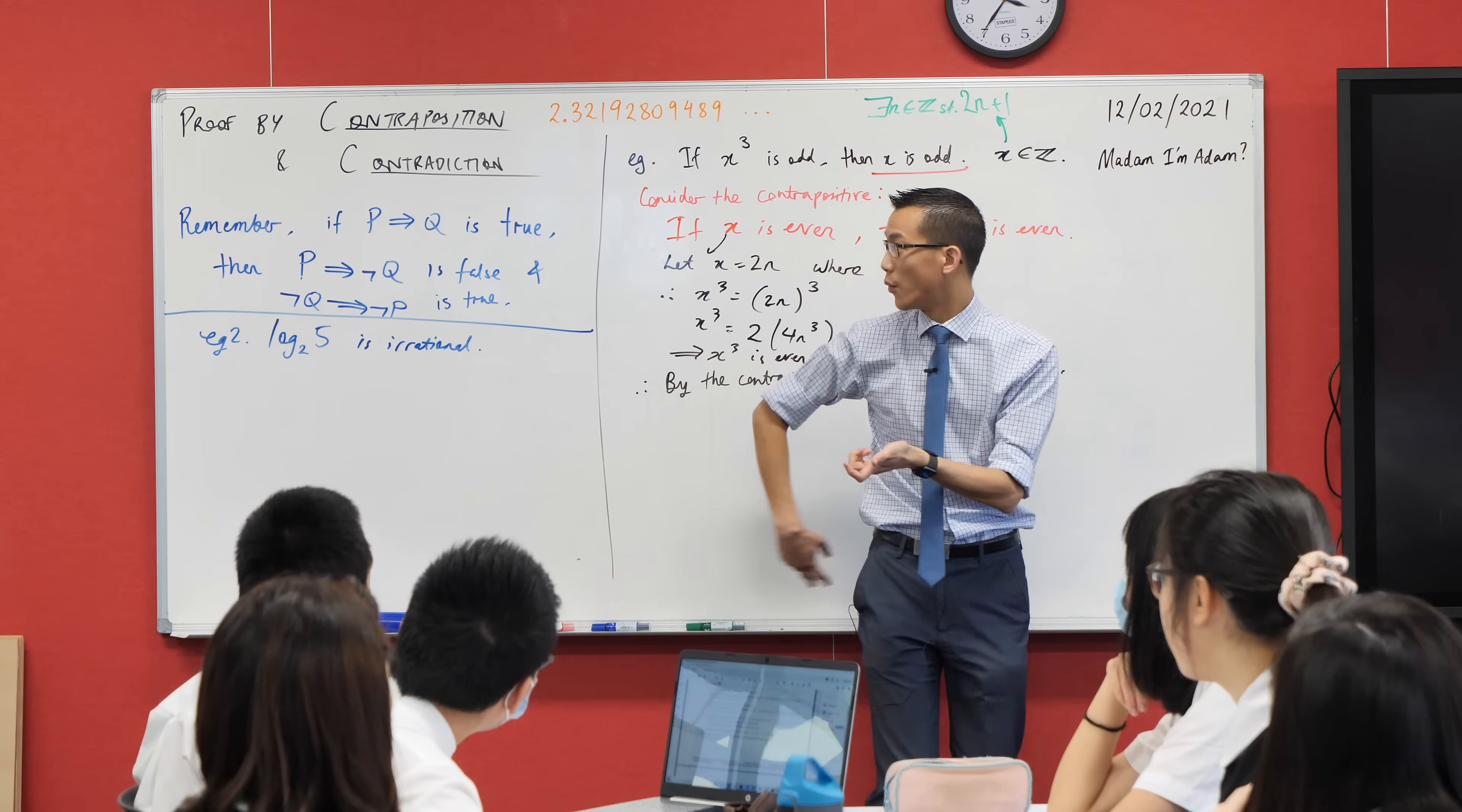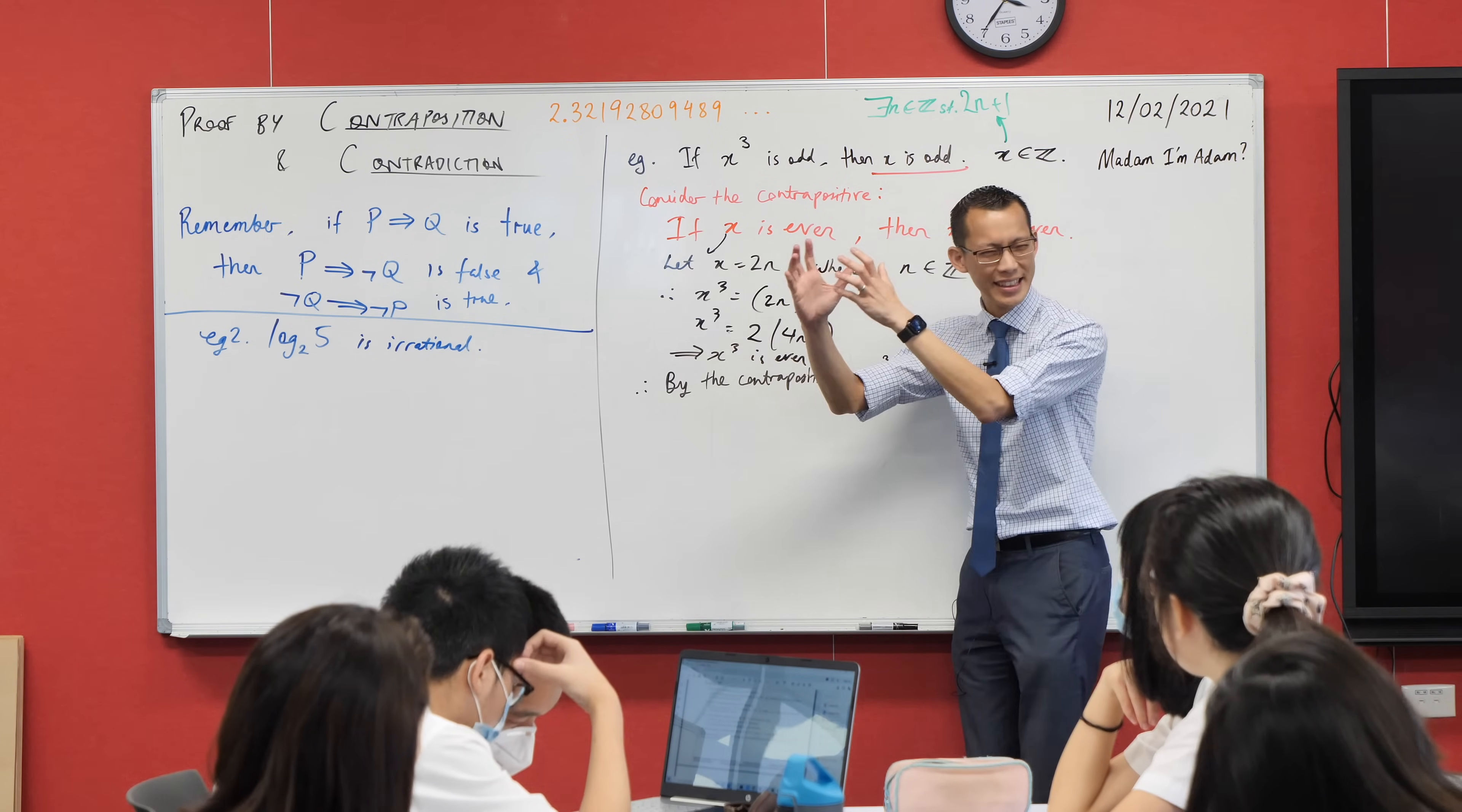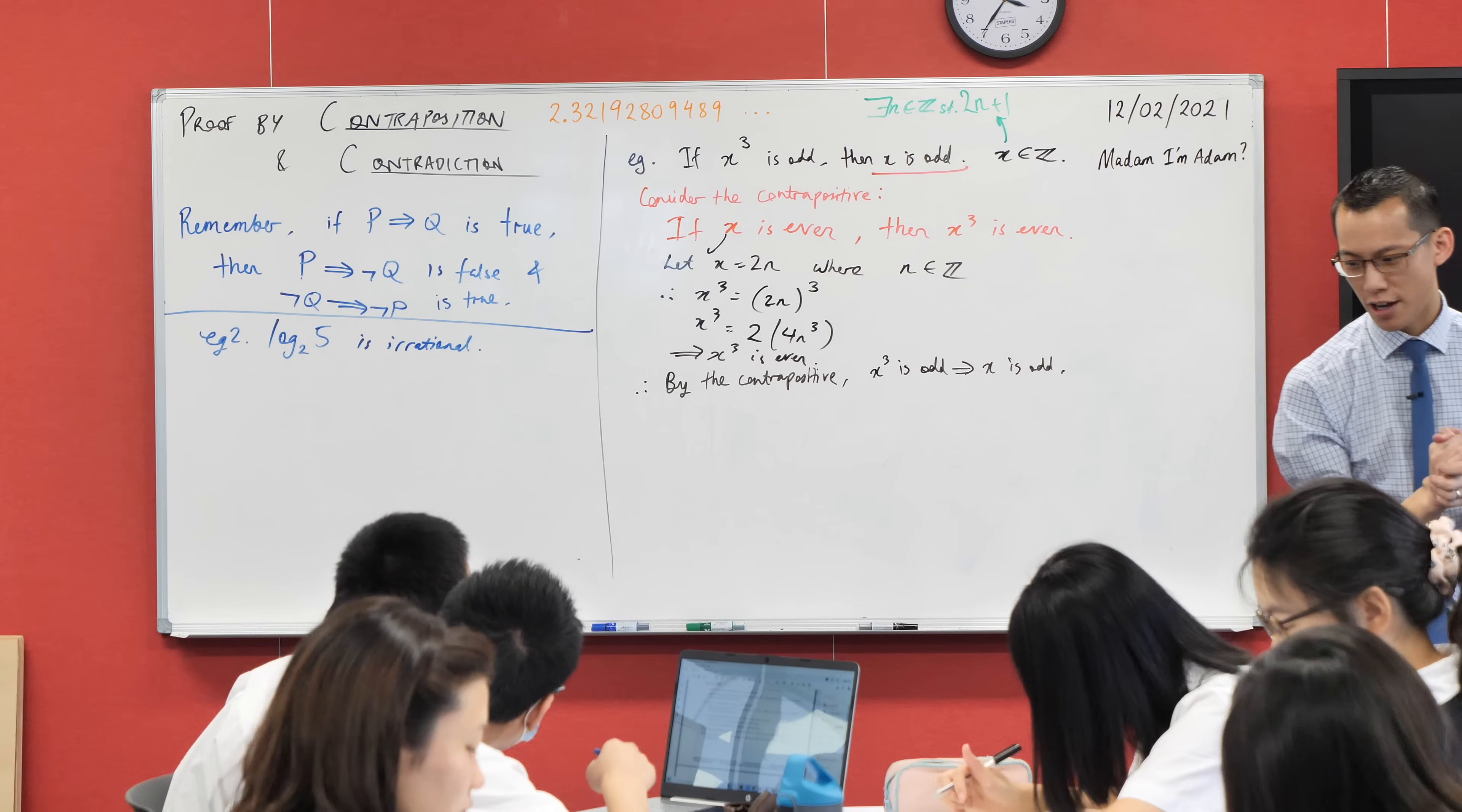To prove something by contradiction, we've got to start with the negation, we've got to state the negation quite clearly, know what we're dealing with there. As the name suggests, you want to lead from that negation to something contradictory. Try your hand at it, give you maybe 5 to 10 minutes to have a play, and then we'll come back together. Good luck.